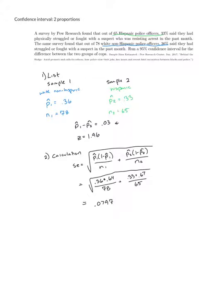Now that we've got SE, the next thing we need to do is put together our interval. This will be taking the difference, adding and subtracting Z times SE or .03 plus and minus 1.96 times .0797. When we do this our numbers are going to look a little bit funky. I get negative .1262 and positive .1862. This is telling us that the difference in the percentage of Hispanic versus non-Hispanic officers who struggle or fight with suspects is somewhere between negative 12% and 18%.